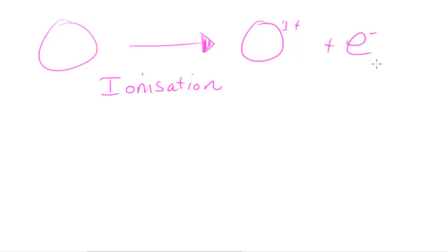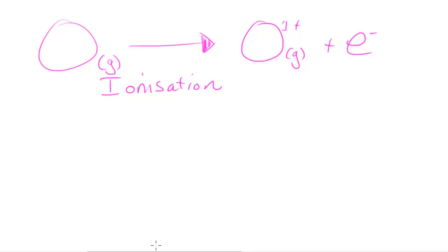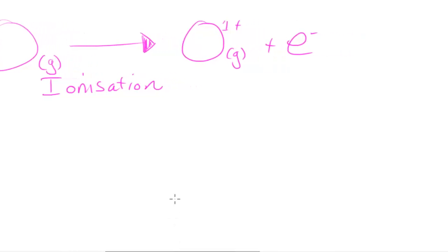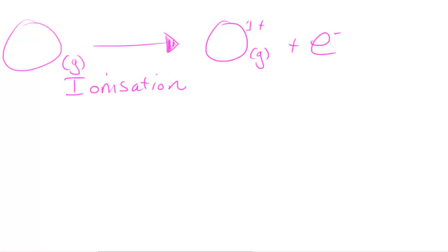This process usually occurs when the atom or molecule is in the gaseous state, so I'll put a state symbol 'g' here. This means the oxygen is a gas when this happens and the oxygen ion is a gas when it's produced. In order to cause this to happen, this is an endothermic process, meaning that energy is taken in.